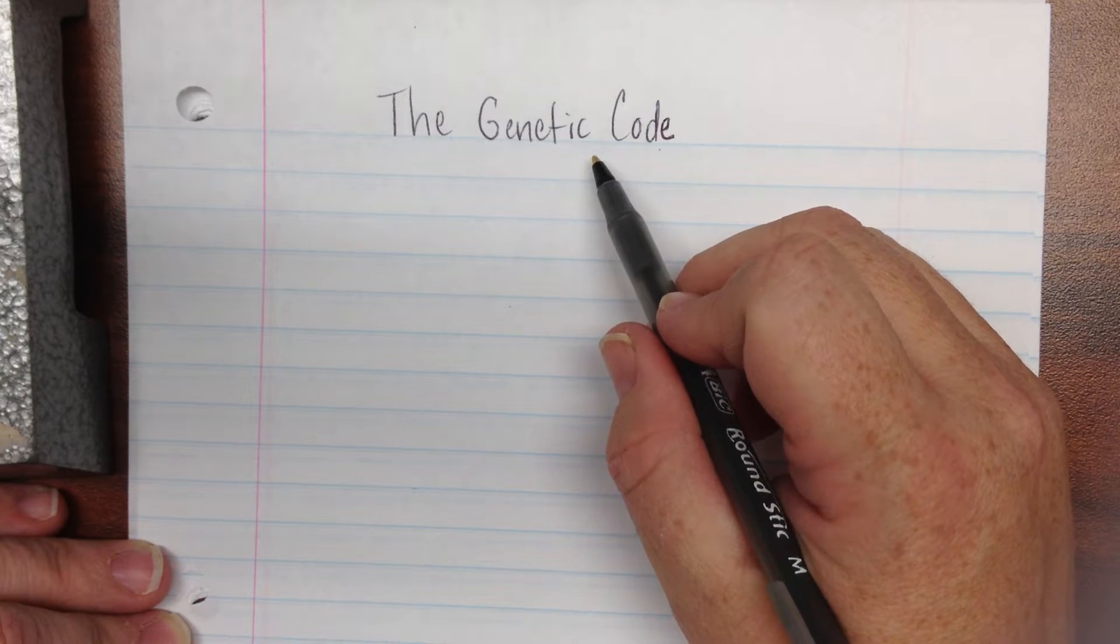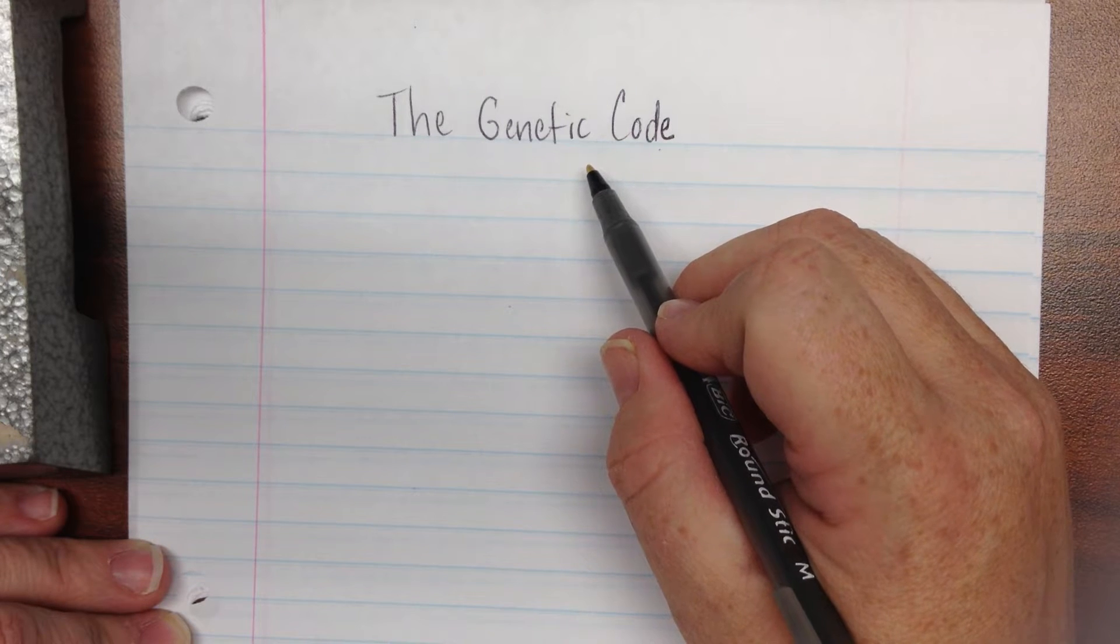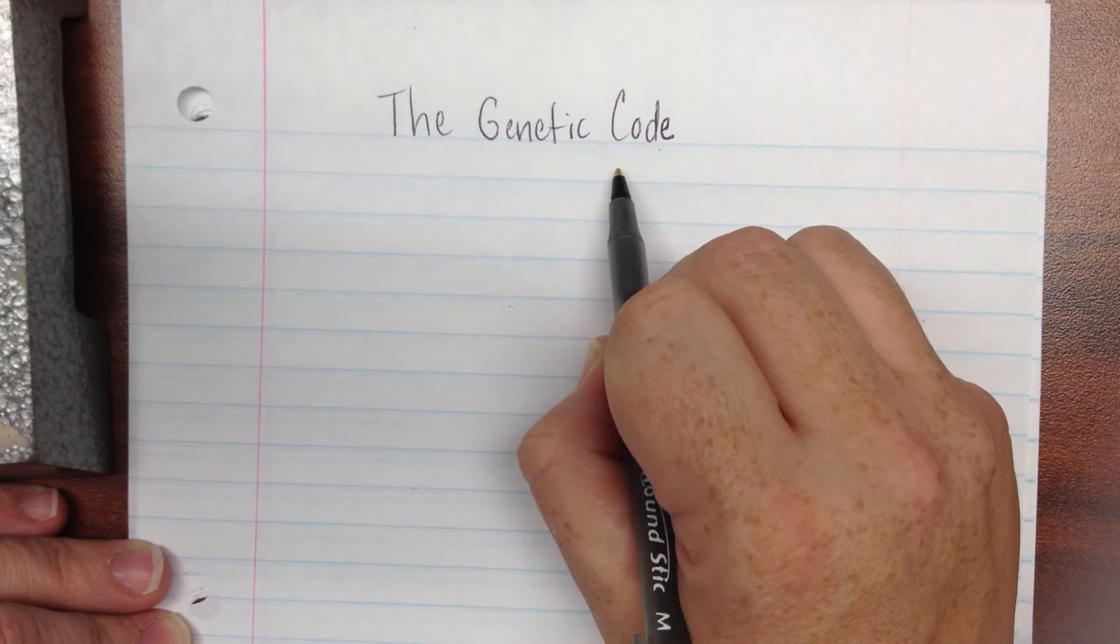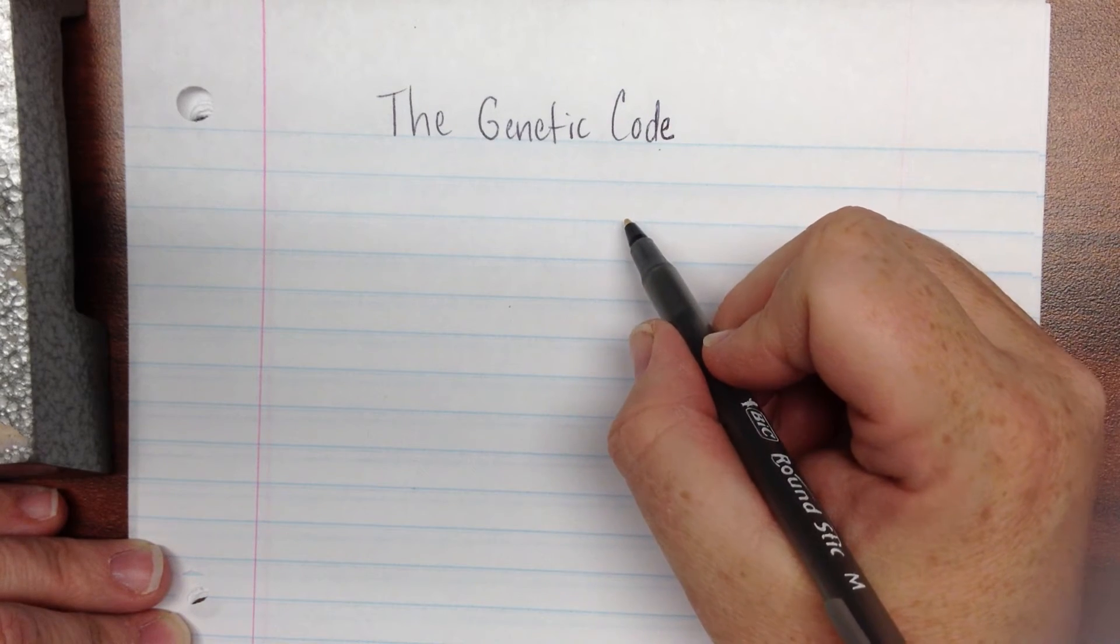Except instead of using zeros and ones, we're going to be using those four letters you already know about: A, T, C, and G. And the order of those is going to determine what proteins the cell makes, which then kind of determines what the cell does.